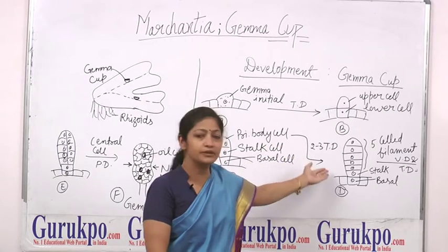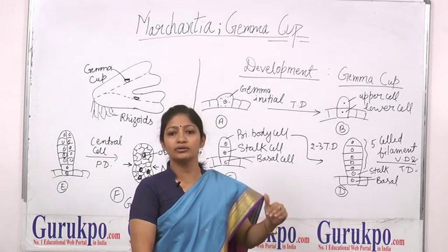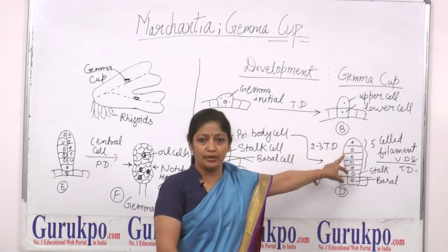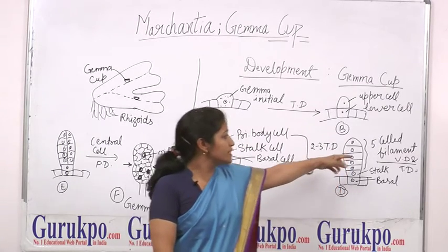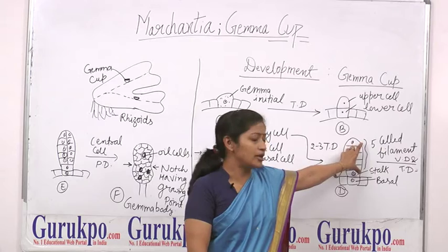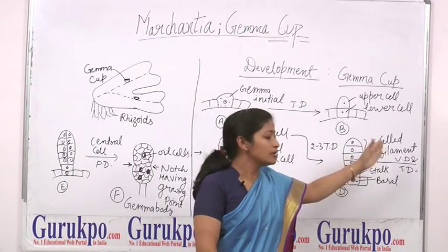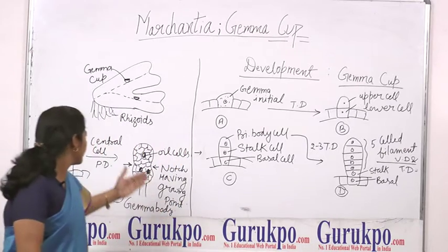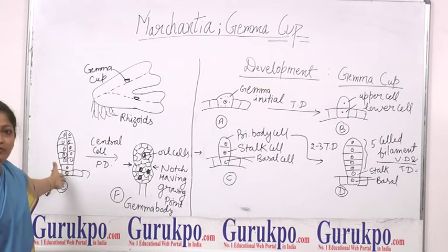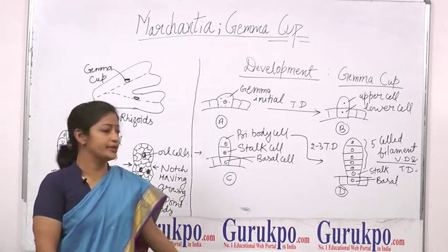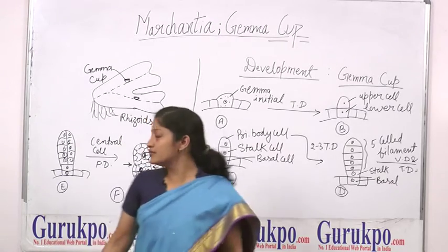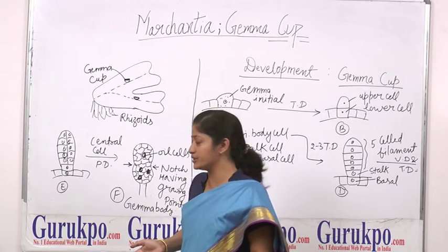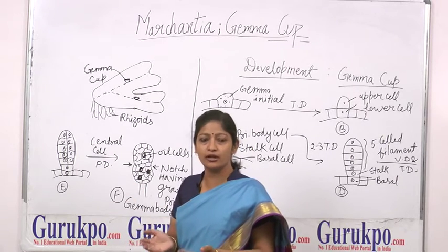The basal cells are mostly embedded in the thallus, and the stalk cell acts as a single simple stalk. The body cells further divide by two or three transverse divisions to form five-cell filaments. In these cells, vertical and transverse divisions then occur, forming a more complex filament.